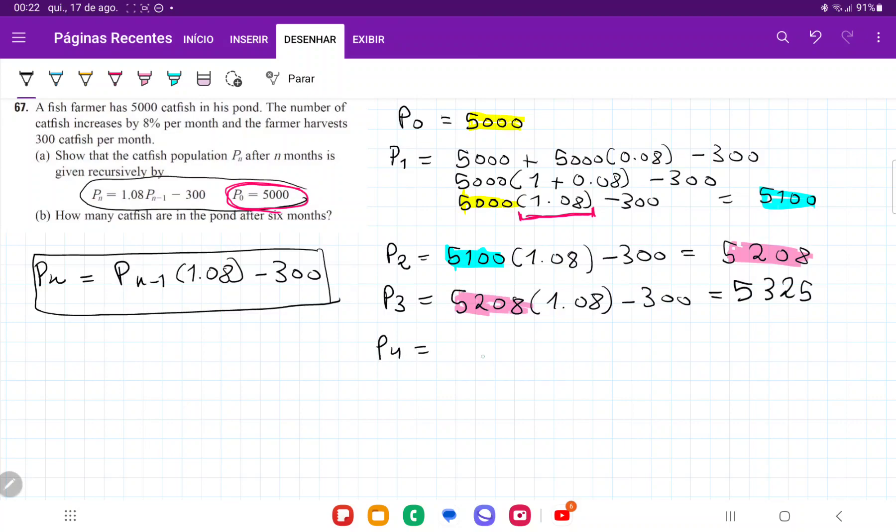So P4 is going to be 5,325 times 1.08 minus 300. And that one is going to be 5,451. P5 is going to be 5,451 times 1.08 minus 300.